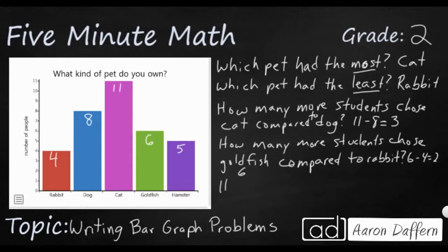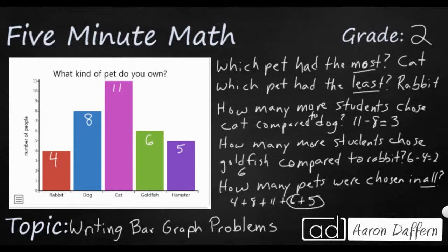And then finally, I might add, I might say how many pets were chosen in all. In all gives me a big addition problem. I've got to take all of these numbers and I've got to add them up. So I need to add up 4 plus 8 plus 11 plus 6 plus 5. And I can do this any way I want to. So I'm going to take these two numbers. That's an 11. So I've got 11 and 11. So that's 22. And 4 and 8 is 12. So 12 plus 22 makes 34 pets were chosen in all.